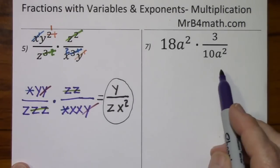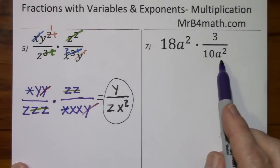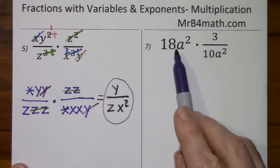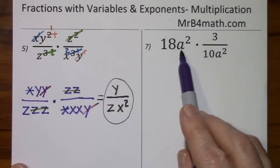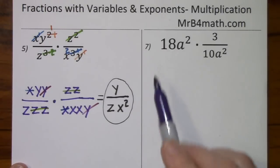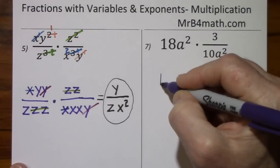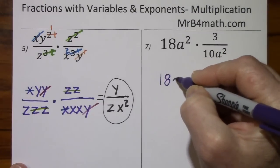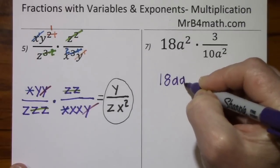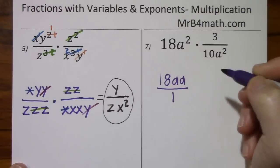Looking at number seven, we don't have all fractions. We have a coefficient, a variable, but it's certainly not a fraction. So I'll rewrite that. 18a times a over one.